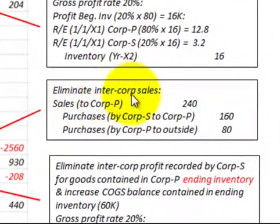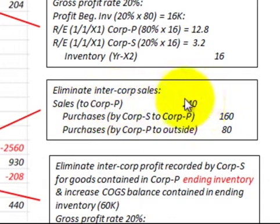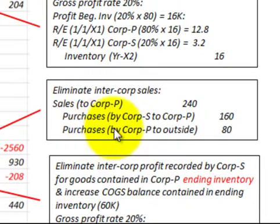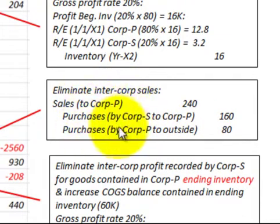Next, we eliminate any inter-corporation sales between the subsidiary and the parent. We debit sales made to the parent corporation for $240,000. Instead of crediting cost of goods sold as in the perpetual system, we use the purchases account. Sales from Corporation S to Corporation P are $160,000, and the balancing amount — purchases by Corporation P from outside — is $80,000. So in this elimination we debit sales for $240,000 and credit purchases for $240,000, since the periodic system uses the purchases account rather than cost of goods sold.